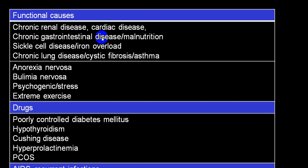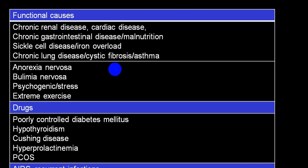Functional causes of delayed puberty include chronic renal disease, chronic congestive cardiac failure, gastrointestinal disease, malnutrition, sickle cell disease, iron overload, hemochromatosis, COPD, cystic fibrosis, bronchial asthma, anorexia nervosa, bulimia, psychogenic conditions, and extreme exercise — all of which can result in decreased production of gonadotropin-releasing factor and FSH/LH. Also poorly controlled diabetes mellitus, hypothyroidism, hyperprolactinemia, PCOS, AIDS, recurrent infections involving testes or ovary, and certain drugs can lead to hypogonadism.